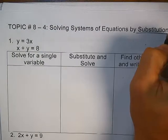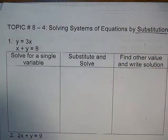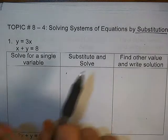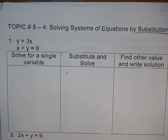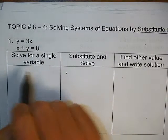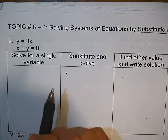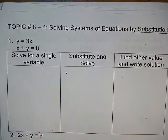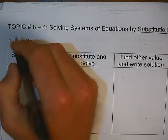When we talk about graphing, we're looking for the point where the two lines intersect — it has an x value and a y value. We're going to do the same thing but using algebra, called substitution. The first step says: solve for a single variable. That means we want to get an x or a y by itself.